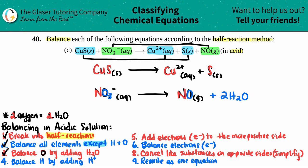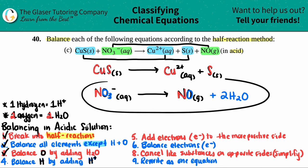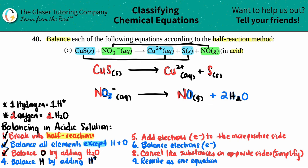Now we balance hydrogen by adding H⁺. If you need to add one hydrogen on either side, you add one H⁺ — don't forget the plus charge. The first half reaction has no hydrogen, so I skip it. In the second, I have two H₂O multiplied by two, giving four total hydrogens on the right and none on the left, so I add four H⁺ to the left side.